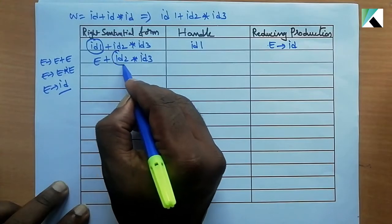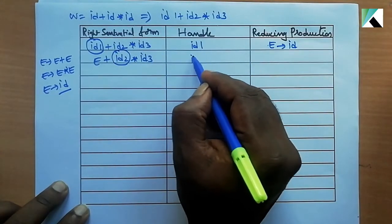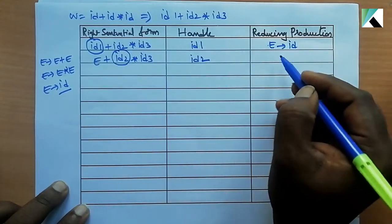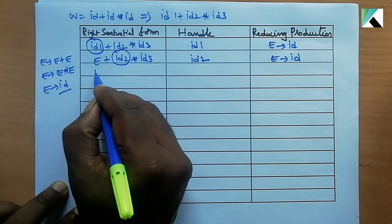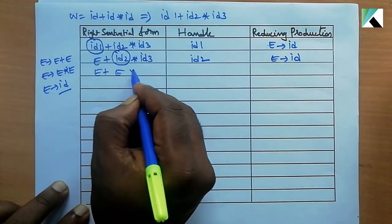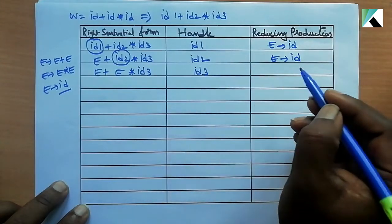Next, consider this one. This has become a handle. Again, I am using the same production to reduce: E plus E star ID3. The third handle is ID3.